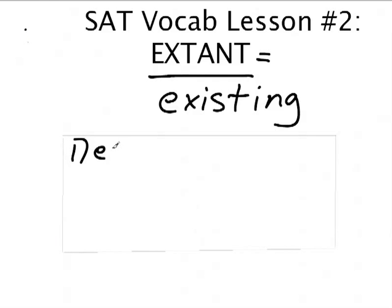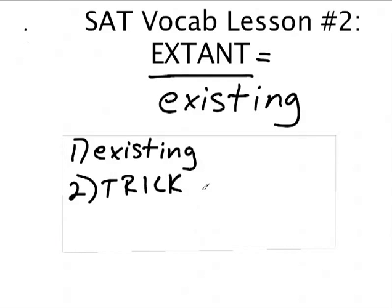And the back of the card is going to have the definition and it's going to have a trick. So on the back, first we're going to say existing. And then the second thing we want to have is our trick. Now, when students first start to embrace this method of mnemonic devices. By the way, mnemonic is spelled in a very weird way, M-N-E-M-O-N-I-C. But that's technically what we're doing is we're using a mnemonic device to remember what words mean.